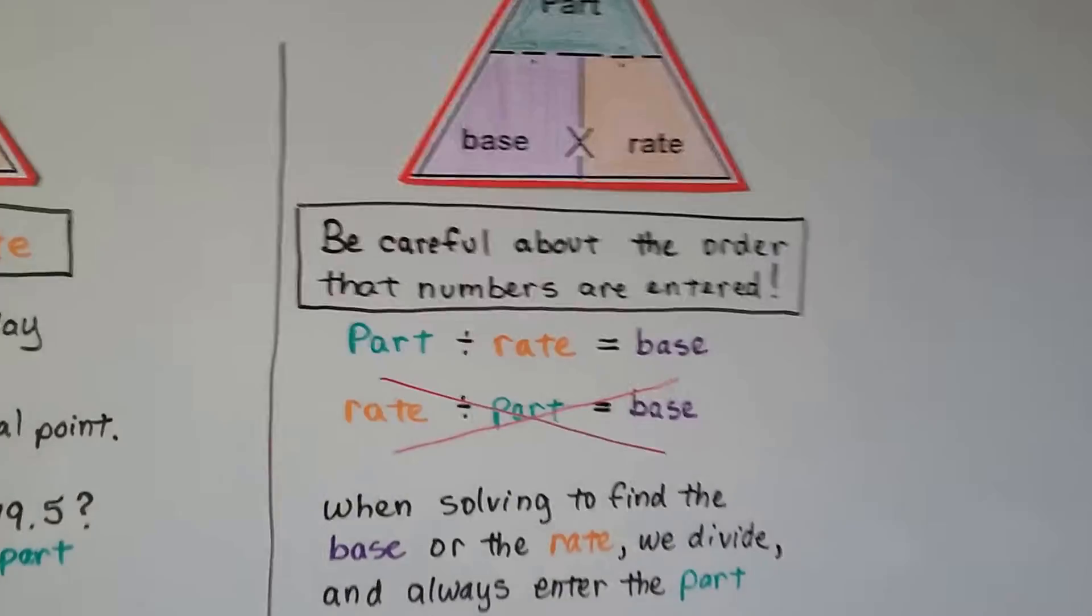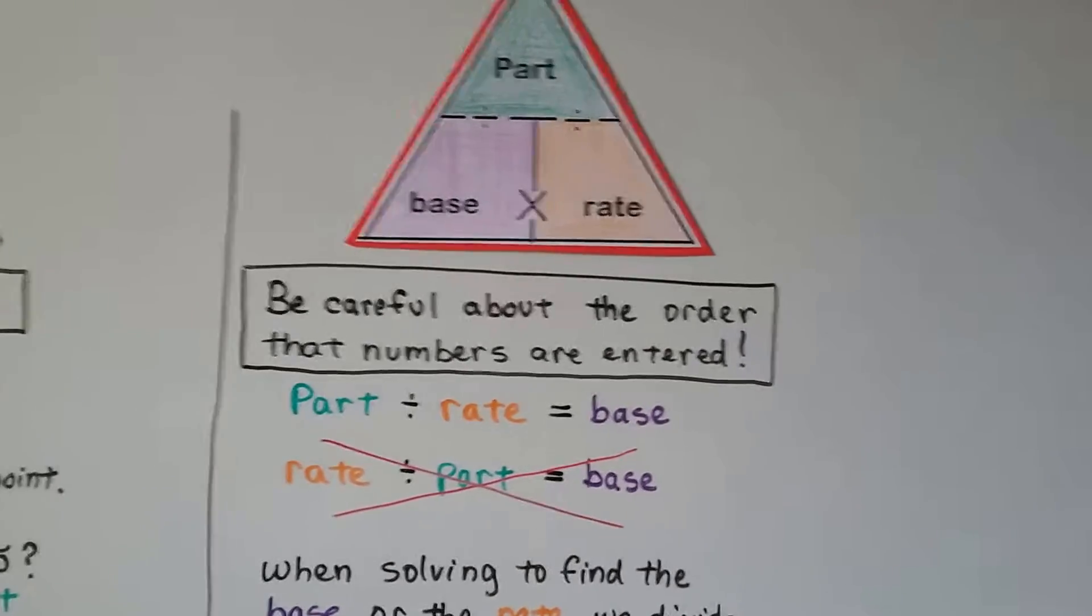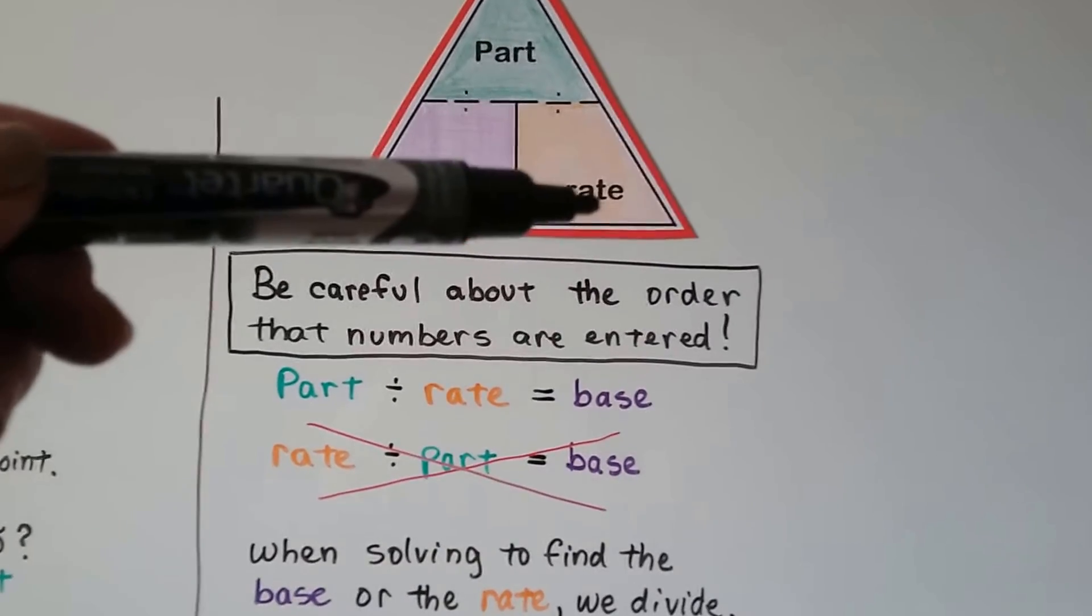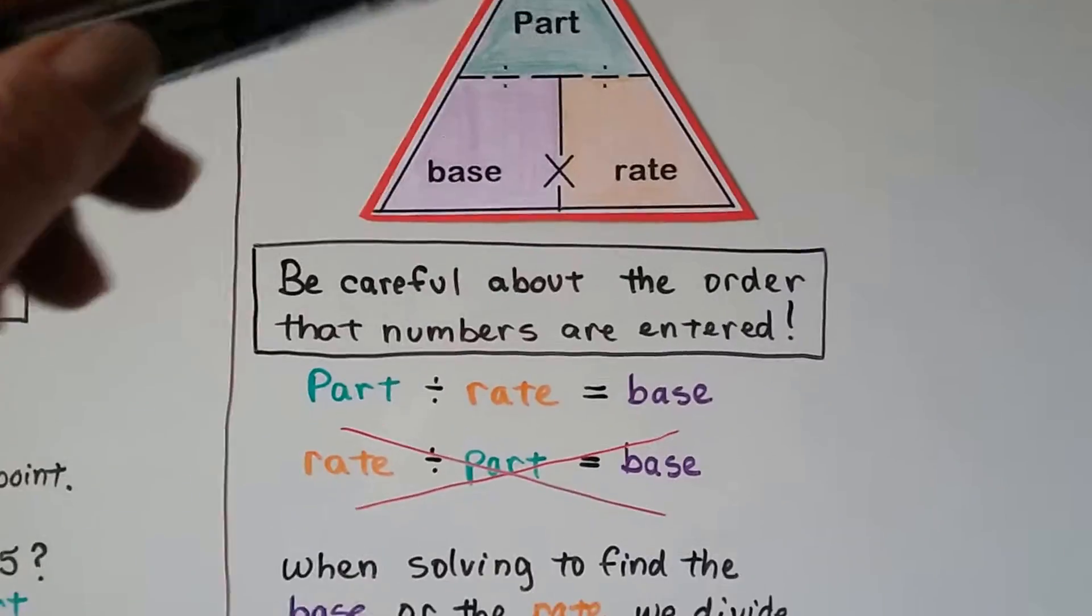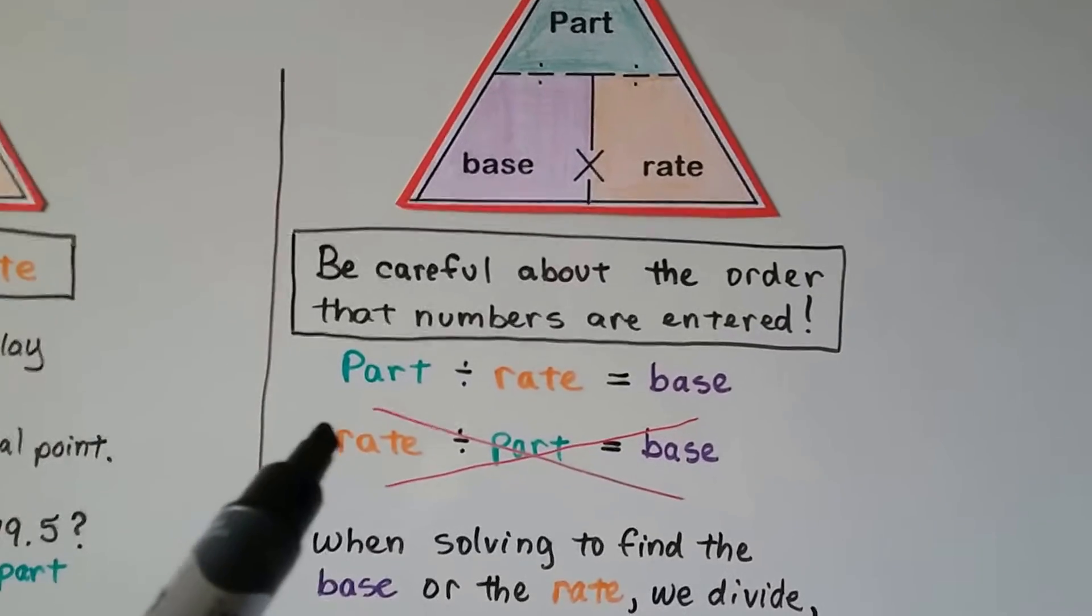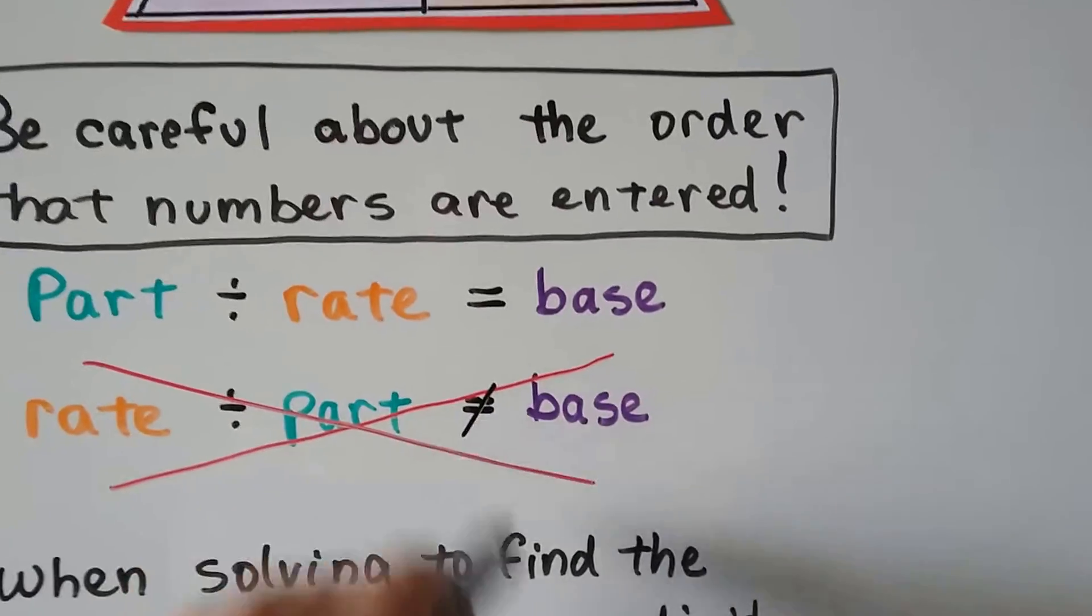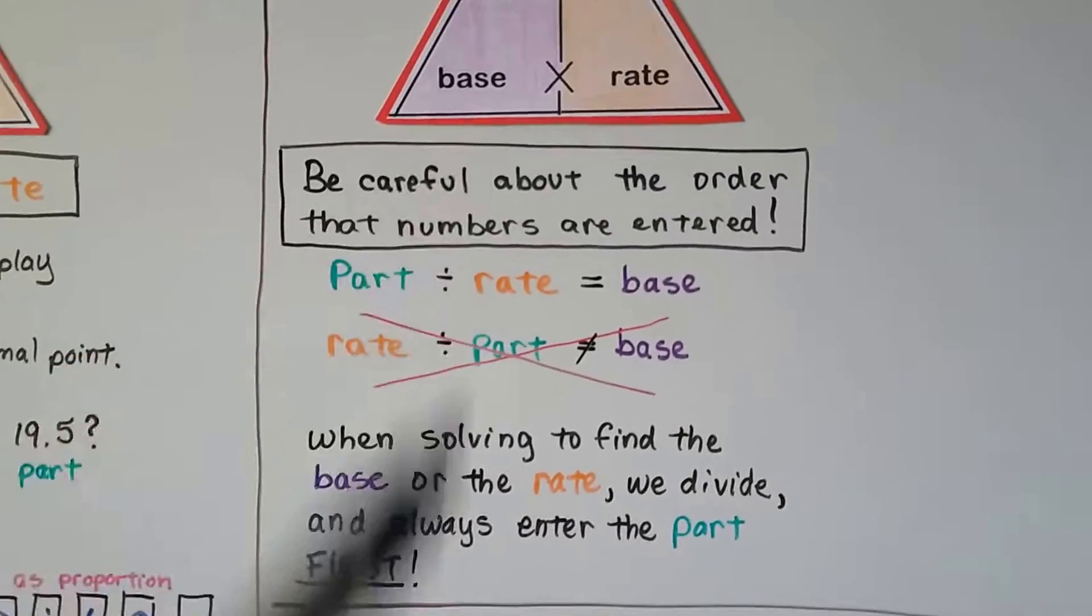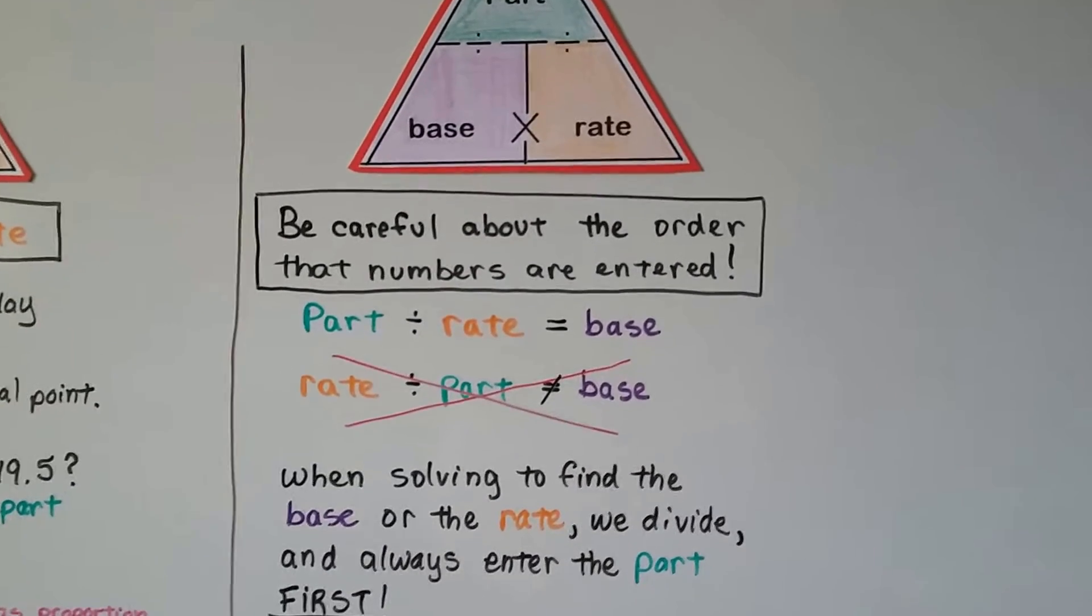But we have to be very, very careful about the order that the numbers are entered. We need to do the part divided by the base or the part divided by the rate. You can't put rate and then divide by part. We don't go upwards. We only divide going downwards to either the base or to the rate. You can't do rate divided by part to equal the base. That is not what will happen. When solving to find the base or the rate, we divide and always enter the part first. Enter the part into the calculator first.